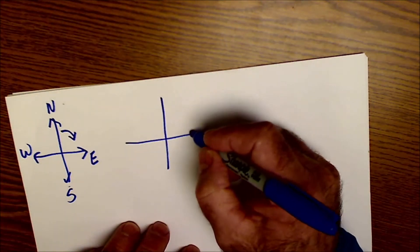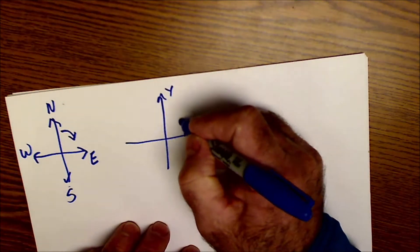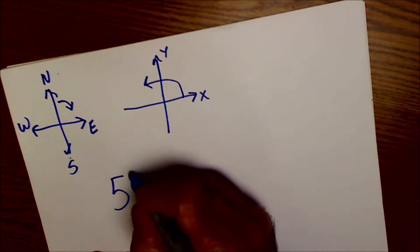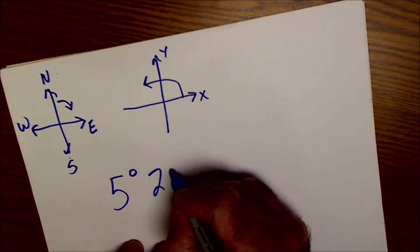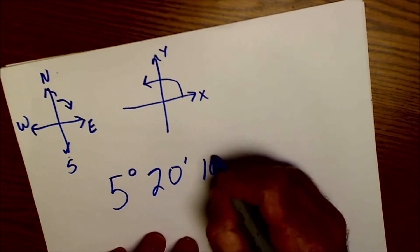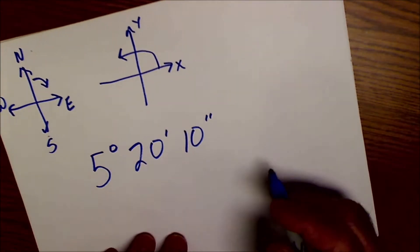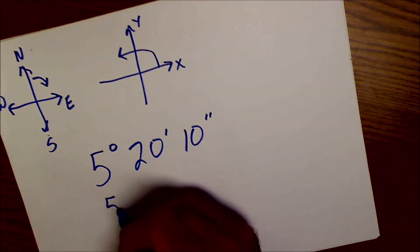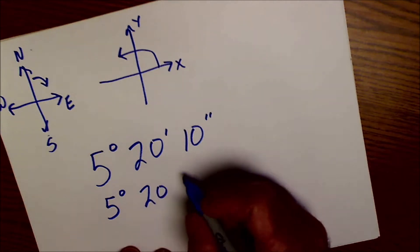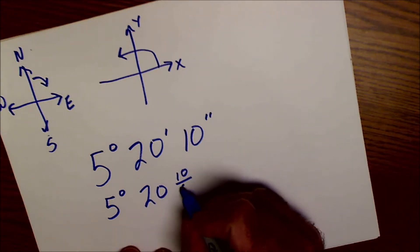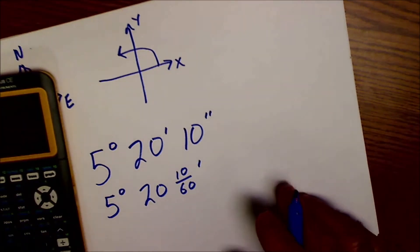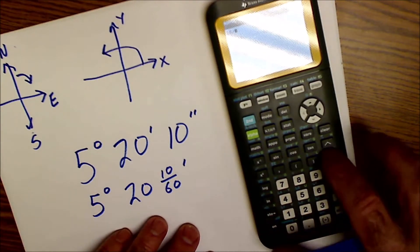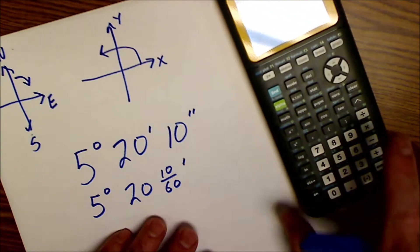In trigonometry, it's XY and you rotate counterclockwise off of X. So let's say I have 5 degrees, 20 minutes, 10 seconds and I want to convert that into a decimal. Well, 10 seconds is 10 of 60, so this is equivalent to 10 sixtieths of a minute. I do 10 divided by 60 and get 0.167.